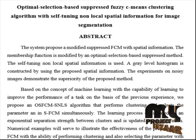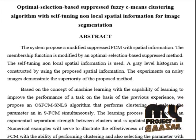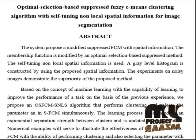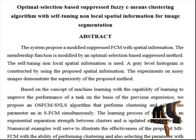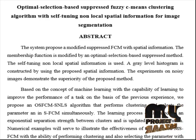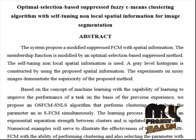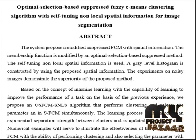To overcome two drawbacks of SFCM, this paper proposes an optimal selection based suppressed fuzzy c-means image clustering algorithm with self-tuning non-local spatial information for image segmentation. By using an efficient denoising algorithm, the input noisy medical image is rapidly denoised to improve robustness. However, integrating spatial information into the conventional OASFCM-SNLS takes longer time to converge.